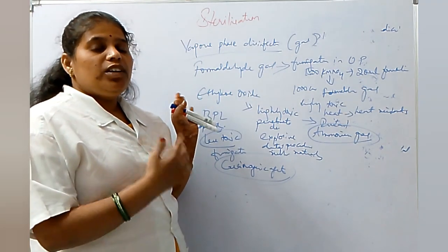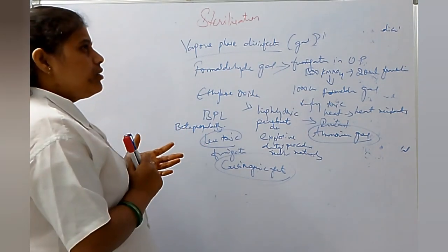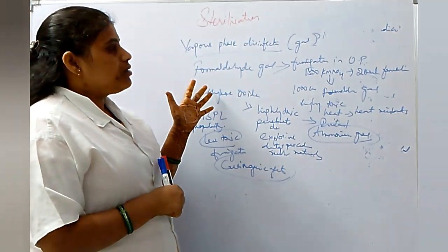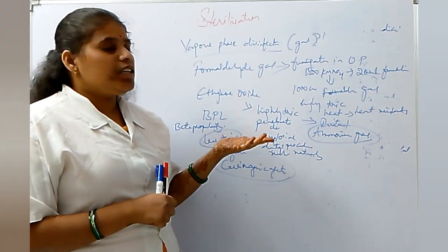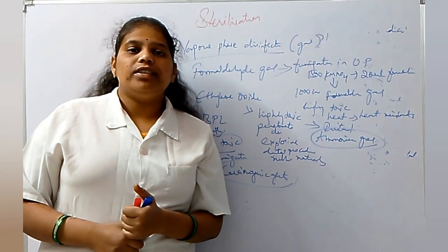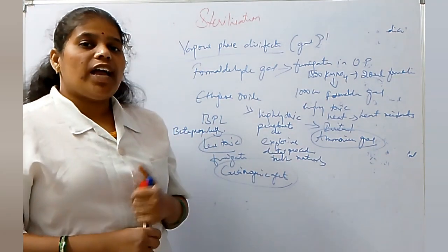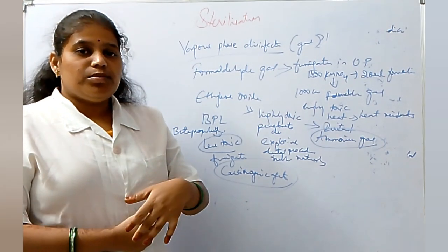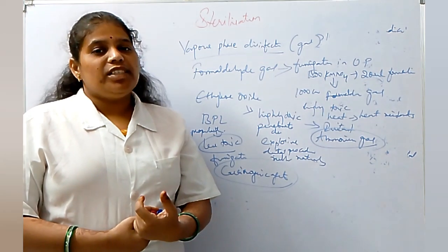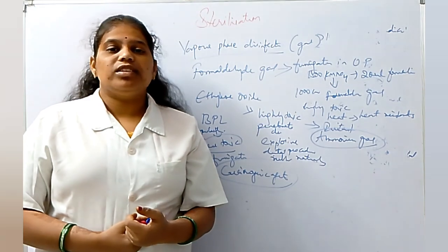We have finished sterilization, which includes physical sterilization — dry heat, moist heat, and filtration — and chemical sterilization using chemicals like aldehydes, alcohols, phenols, halogens, oxidizing agents, salts, and dyes. Study material for these topics will be provided. Please like, share, and subscribe to Paramedicals Team for new videos. Thank you.